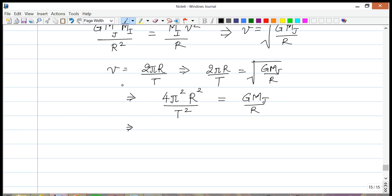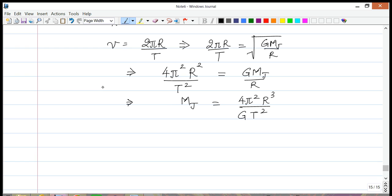And on the right-hand side, simply G M_J divided by R. So now from here I can isolate M_J. M_J is equal to 4π² R³ divided by G T². Okay, so now we have all the pieces. Let's plug in the values.